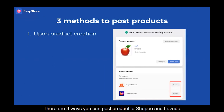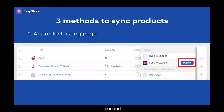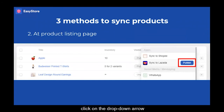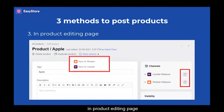There are 3 ways you can post products to Shopee and Lazada. First, right after you have created the new product, click Publish. Second, at the product listing page, at the far right side of the product name, click on the drop-down arrow and click on Publish beside Sync to Shopee or Lazada. Or, in the product editing page, click More Actions, then Sync to Shopee or Lazada.